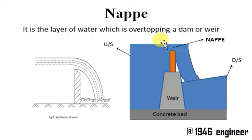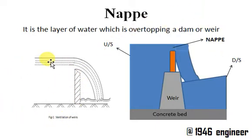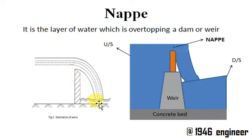Nappes are classified into three different types: free nappe, depressant nappe, and clinging nappe. I'm going to explain these with this diagram. This is a sharp-crested weir where water is flowing from the upstream side to the downstream side.